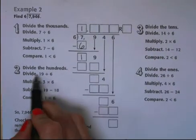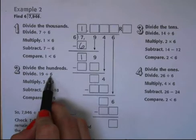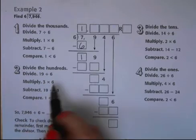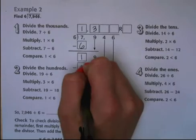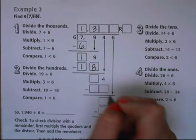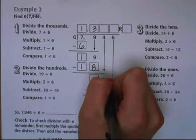Step two, we need to divide the hundreds. So we do 19 divided by 6. We know that 3 times 6 is 18, so we can write our 3 up here above our 9. And subtract 18. 19 minus 18 is 1. When we bring down our 4, we have 14.